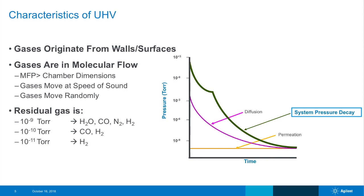The gases in a UHV system are in molecular flow — the mean free path is much greater than the chamber dimensions, meaning particles have no interaction with each other and only interact with the chamber walls. They move at the speed of sound, roughly 750 miles per hour, moving randomly in all directions in straight lines. Even at 10⁻⁹ torr, we still have water, carbon monoxide, nitrogen, and hydrogen coming off surfaces. At 10⁻¹⁰, we're really looking at carbon monoxide and hydrogen. In true UHV — what people now call XHV — down at 10⁻¹¹ torr and lower, the only species remaining is hydrogen.